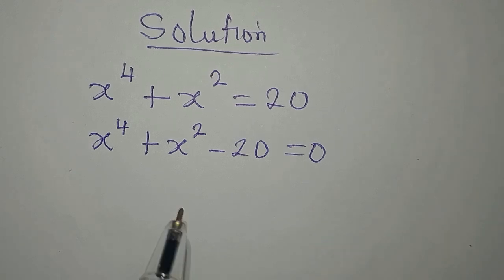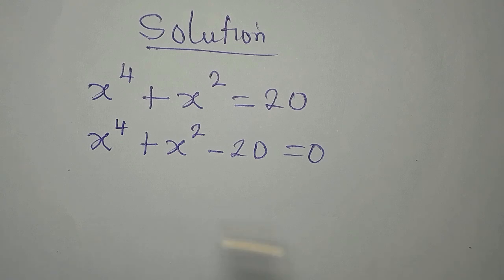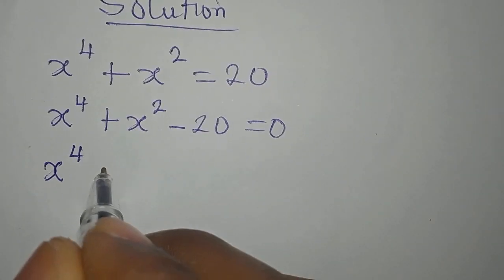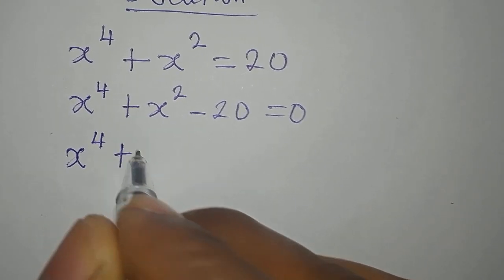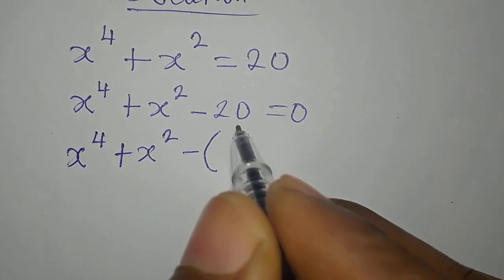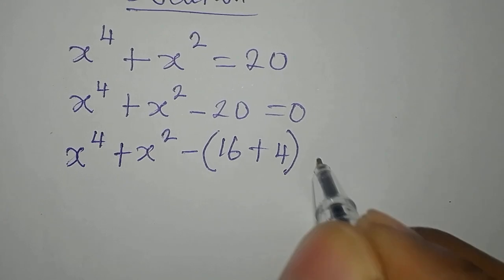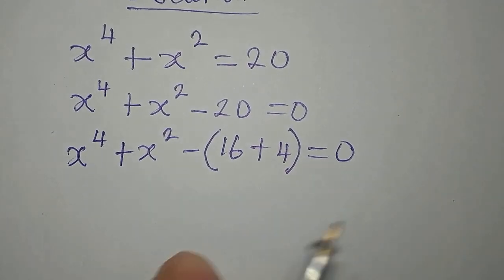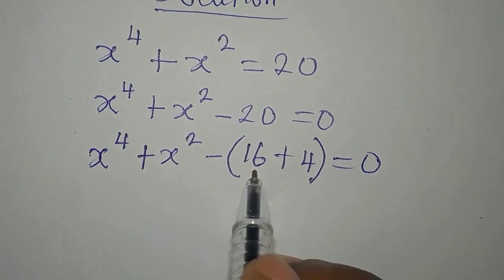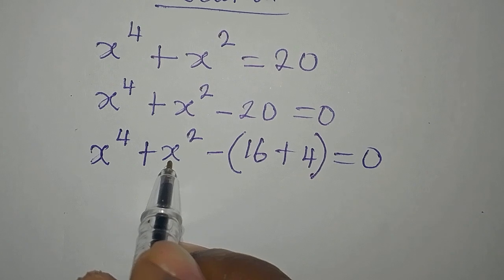Now from here, let's see what we can do. Can we express 20 to appear in a specific form? The answer is yes. So that means we write x to the power of 4, then we have plus x to the power of 2, minus — open bracket — for 20 we'll be writing 16 plus 4, then we equate to 0.